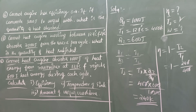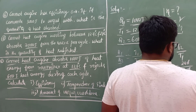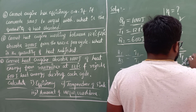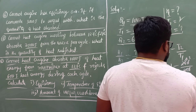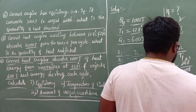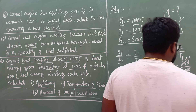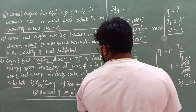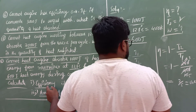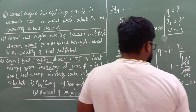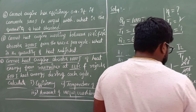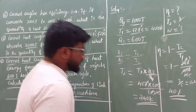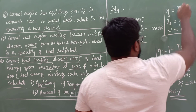The efficiency of the given Carnot engine is 0.4, which is 40%. We have now found both T2 equals 240 Kelvin and eta equals 40%.